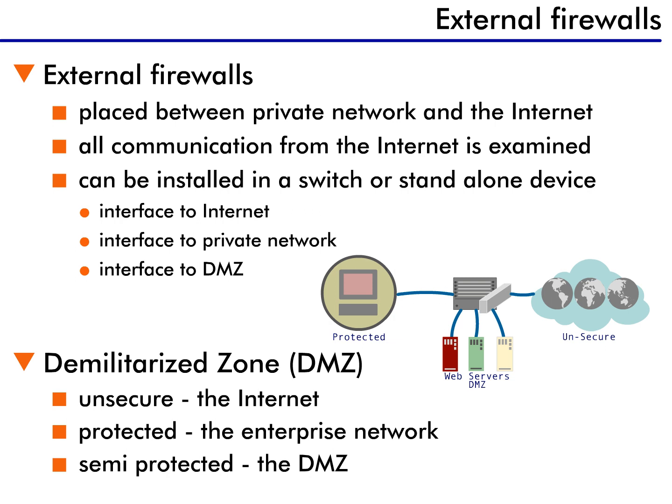Typically, external firewalls are not required to be high-speed devices. This is because they connect to wide area networks, which are typically low-speed links not exceeding 1.5 to 45 megabits per second.